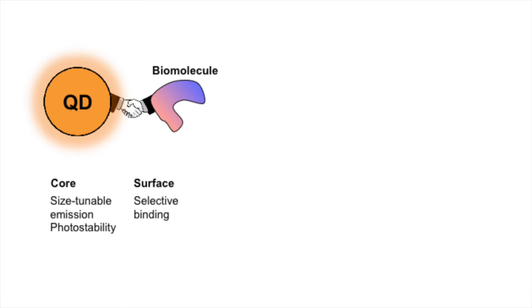Second, quantum dots functionalized with ligands that have specific affinities for certain biomolecules can be used as fluorescent labels to track the movement of biomolecules and single organelles within a cell. The outstanding stability of quantum dots to continuous illumination and their size-tunable emission color makes quantum dot-based biological labels a highly promising alternative to easily degraded organic fluorophores.